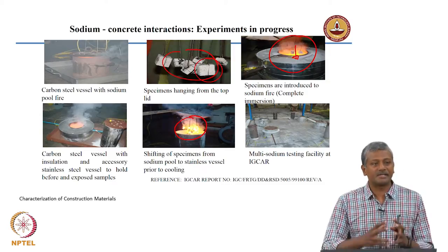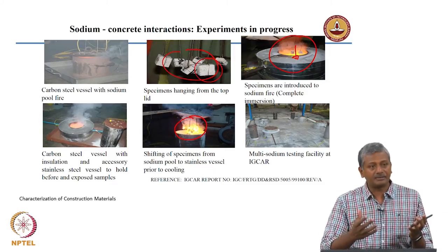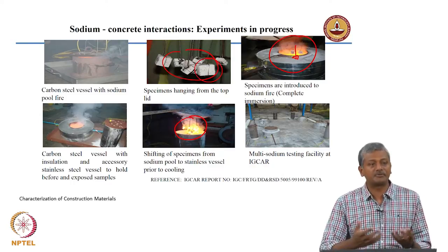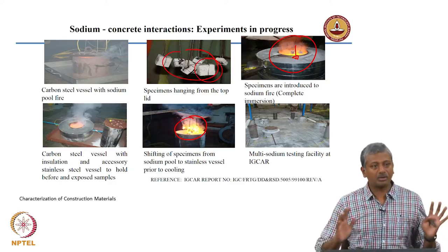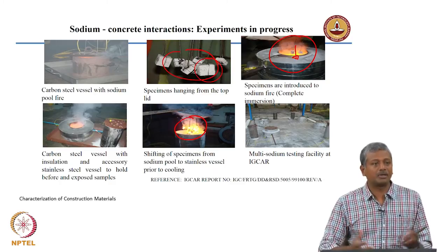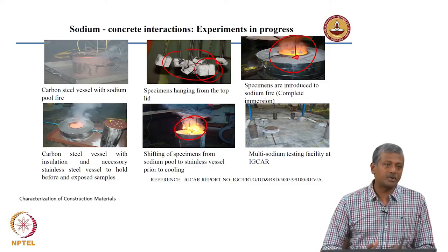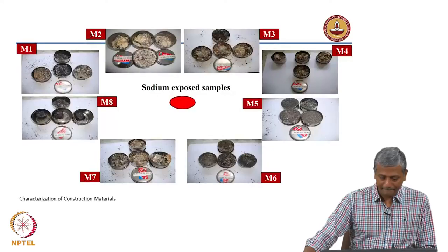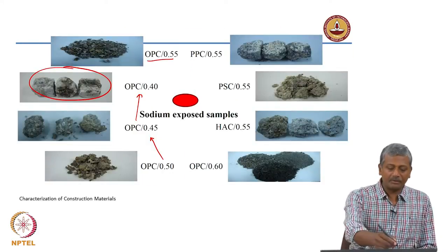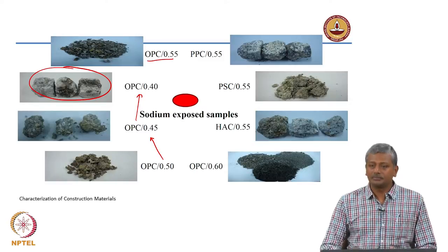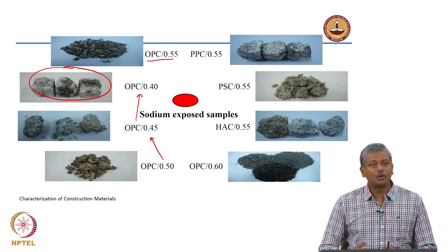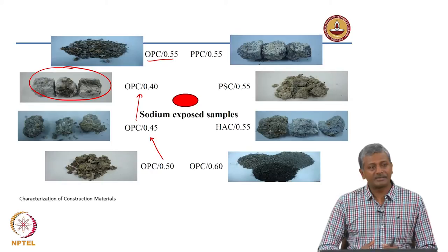This liquid sodium is inside pipelines and when these pipes leak, sodium may come out and create a major fire. There will be a pipe burst, for example, that will create a major fire on the concrete, and we want to see what the concrete does to withstand that fire — whether it can protect the structure. When you reduce the water-cement ratio, you tend to improve the stability of the system because you have lesser water to escape, forming a much more stable system.